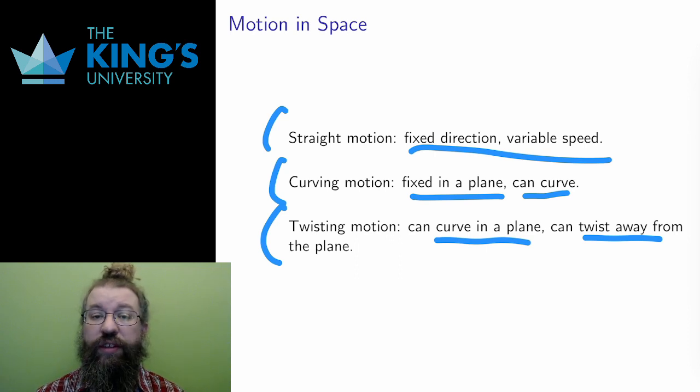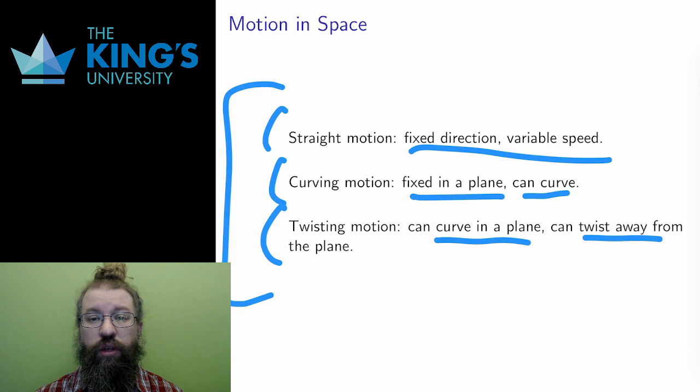Together, these three types of motion can describe almost any movement in three-dimensional space. Think about flight. You can fly in a straight line, you can fly in a curve, or you can fly with some kind of twisting motion. And that applies to the flight of birds, insects, airplanes, etc.